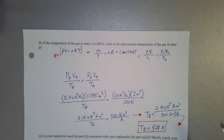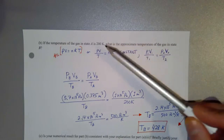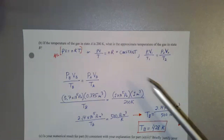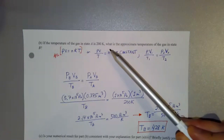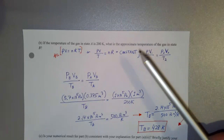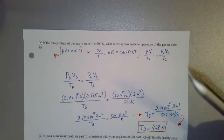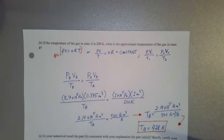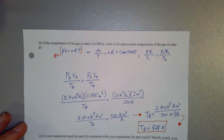Part B: if the temperature of the gas in the initial state is 200 kelvins, what is the approximate temperature in state B? We already know conceptually the temperature should be greater — the question is how much greater.